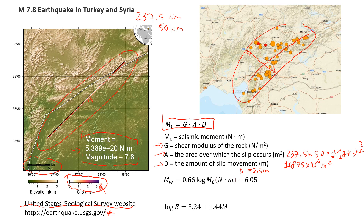Now we need to estimate the shear modulus of the rock. I'm going to use a commonly used reference value of 20 GPa. Converting to SI units, that is 20 times 10 to the power of 9 Newtons per square meter. So now we know all the numbers, and we can calculate the seismic moment.